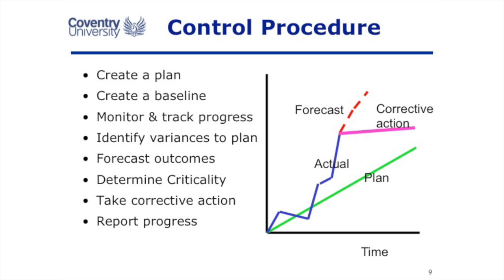Eventually, when you've got enough data, you can start to forecast outcomes. If this continues, we're going to be somewhere we don't want to be — way over budget, way late. So we need to take corrective actions to get back to the plan, to the baseline. It is a lot of work, but your senior management are going to want to know how the project is going — and rather than saying yeah, it's going okay, we need something a little more robust to tell them about the progress of our project.